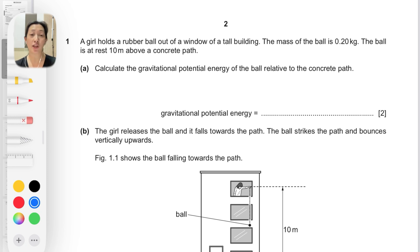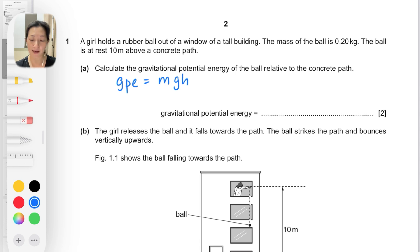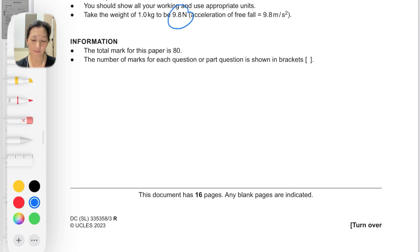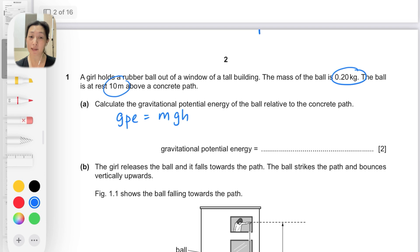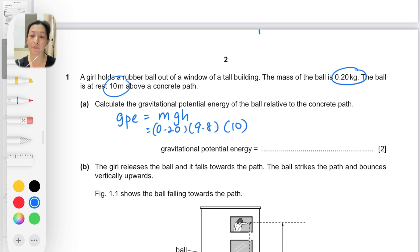For part A, we need to calculate the gravitational potential energy of the ball relative to the concrete path. To answer this you must know the formula for gravitational potential energy, which is mgh, where m is mass, g is 9.8 as written at the front of the paper, and h is 10 meters. So mass is 0.20, g is 9.8, and h is 10, giving us a value of 19.6 joules.